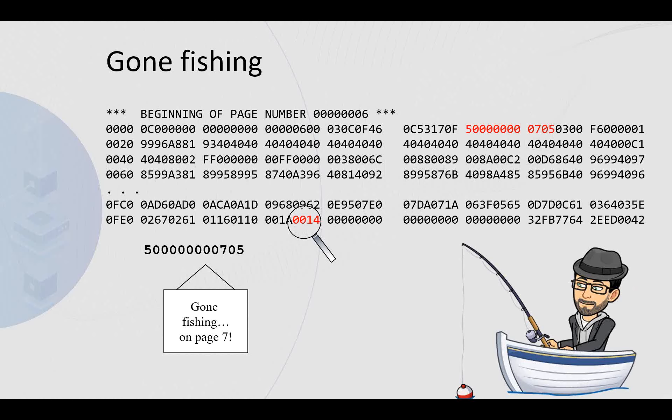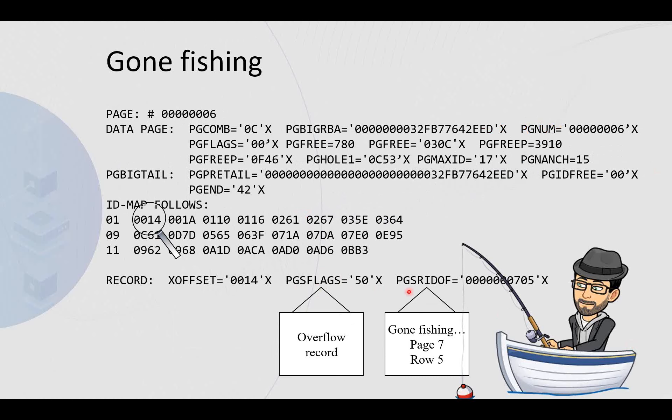Remember we discussed the row header a little earlier. If the correct bits are switched on, instead of being a row header it's now a pointer record, directing DB2 to the new location of the actual data. But the index stays the same, pointing to page six. When the page is read, DB2 recognizes the pointer and will read the reference page to get the row. The pointers will cause additional I/O activity to retrieve the data. This is your overflow record, and this is the new pointer to page seven and row five — that is where row one has now moved to. It's no longer on page six row one; it's on page seven row five.